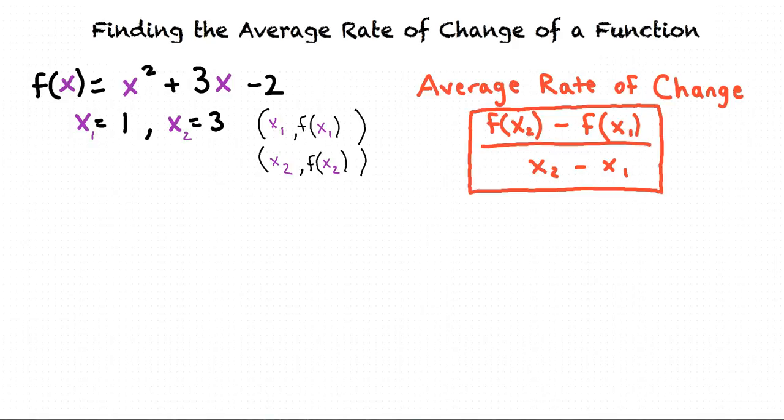So since we already know our x1 and x2 values we can begin. We can start by plugging in the x2 and x1 values into our formula. Substituting in our values for x1 and x2 we have f of 3 minus f of 1 divided by 3 minus 1.